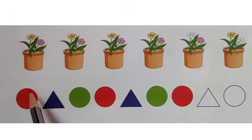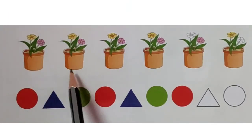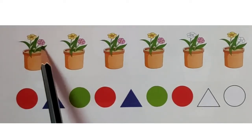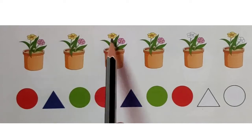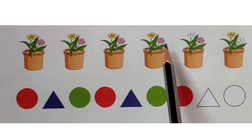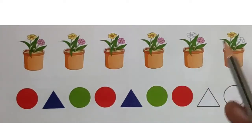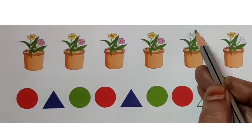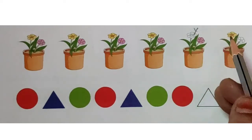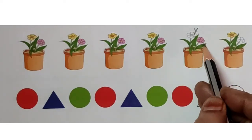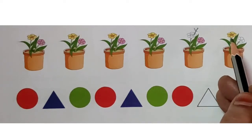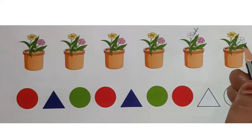Let us move on to the next question. Here are the flower pots. The flowers are yellow and pink. So, yellow, pink, yellow, pink. Again here, yellow, pink. So, next, in the next pot, the flower is yellow. You should colour yellow, and pink is already given. Here, yellow is given. What colour you have to colour here? You have to colour pink.